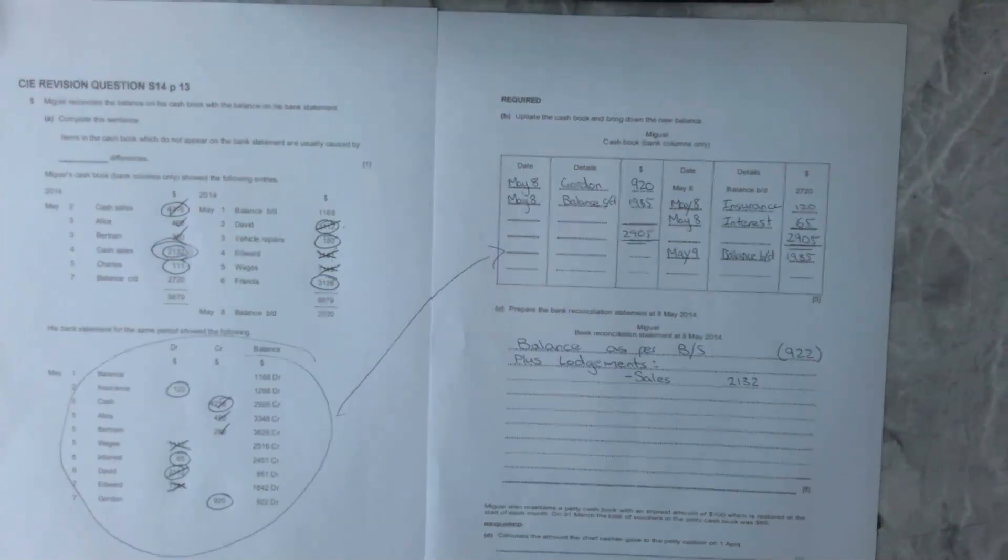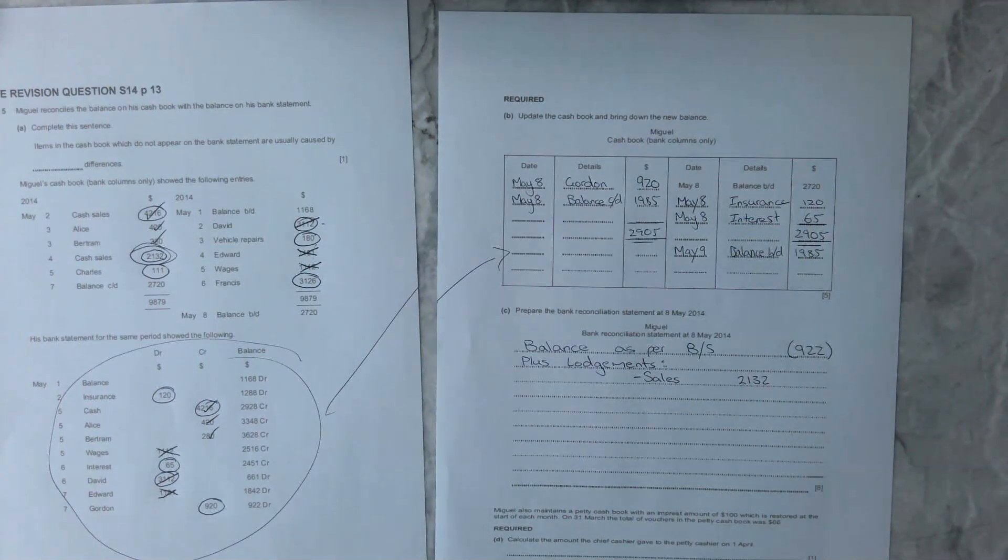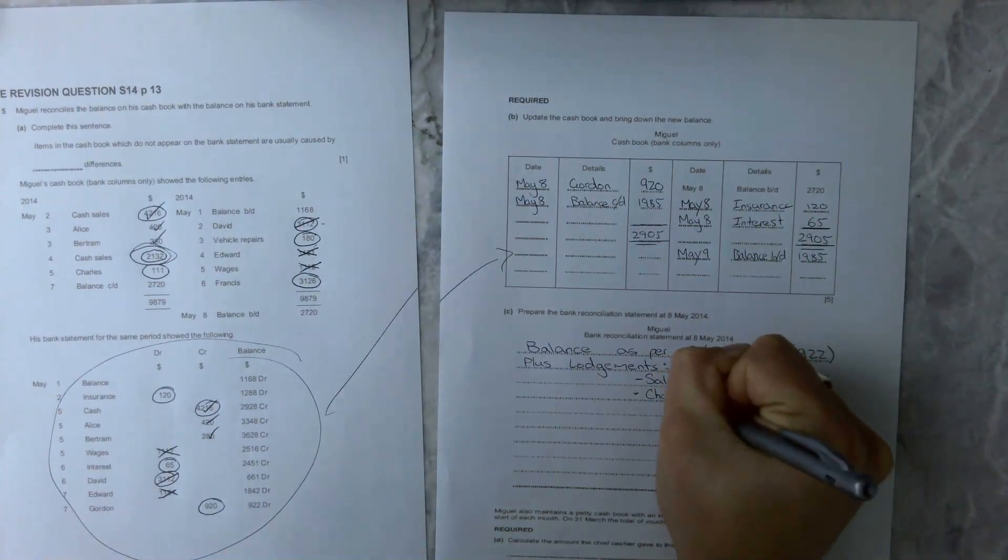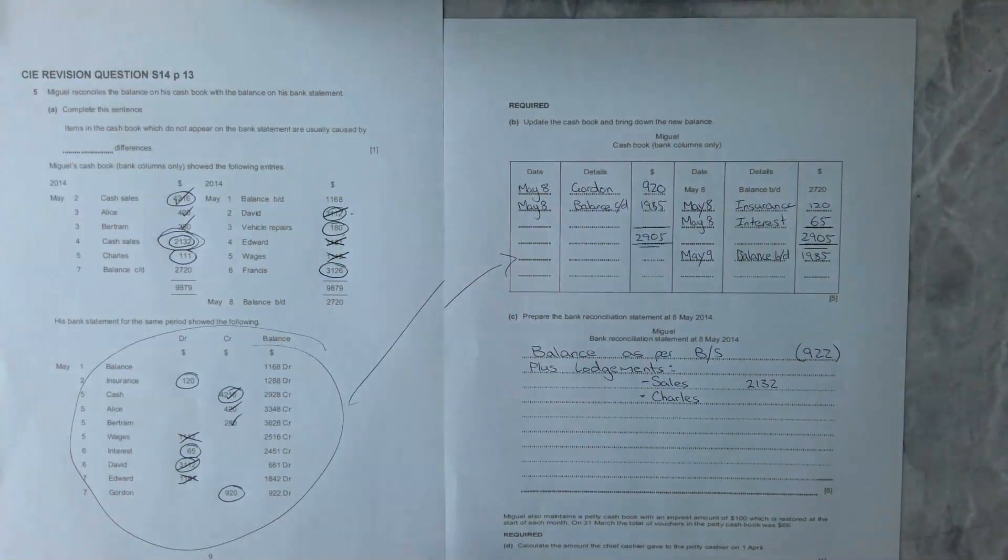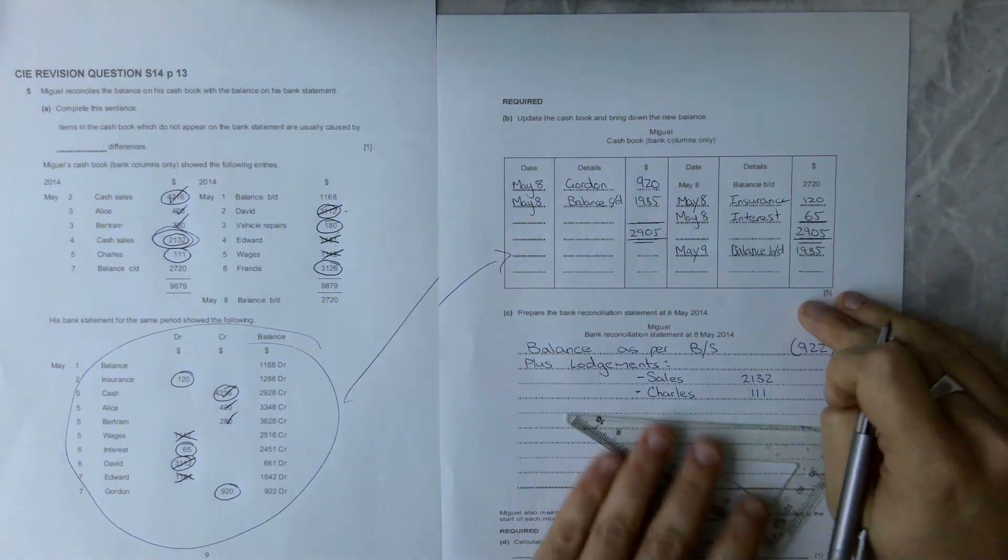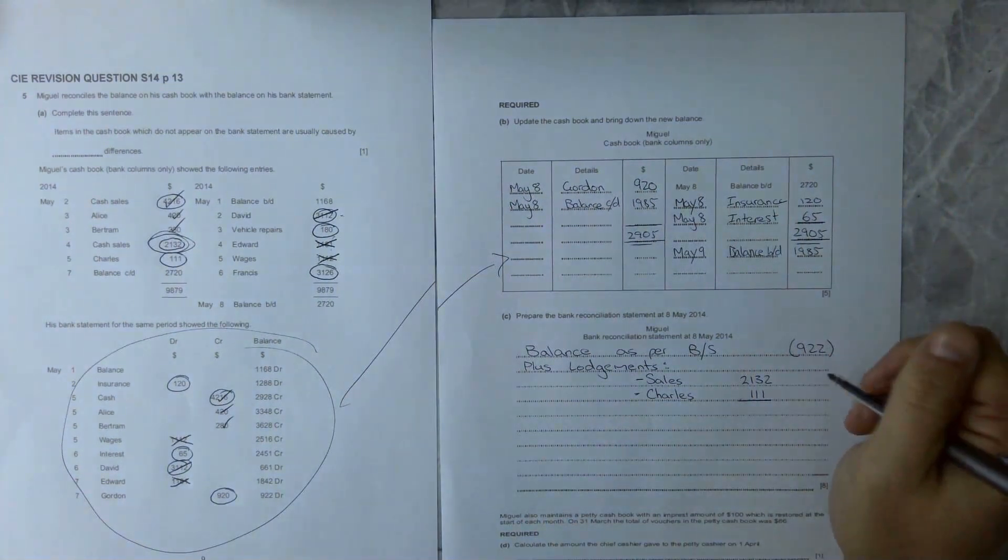Our sales amount is 2132, and we get that from this balance here. So that credit sales amount is there and that's the one we are using. Then you'll also notice that Charles is missing from this account, so our lodgements need to be changed. So Charles is added, and Charles at 111.